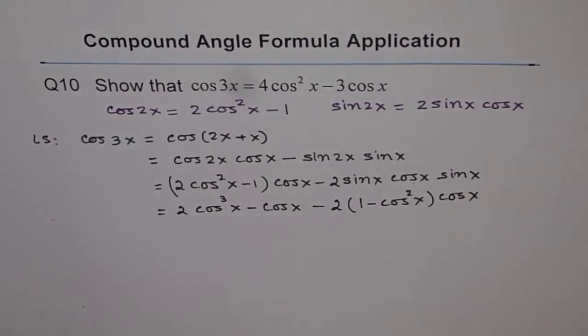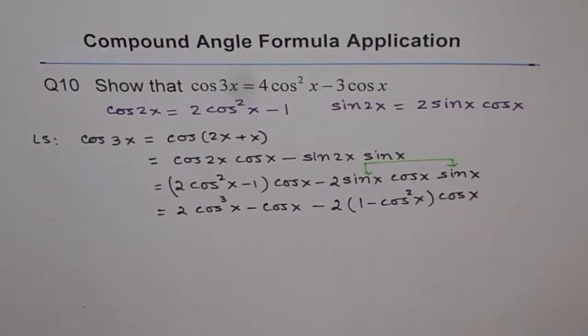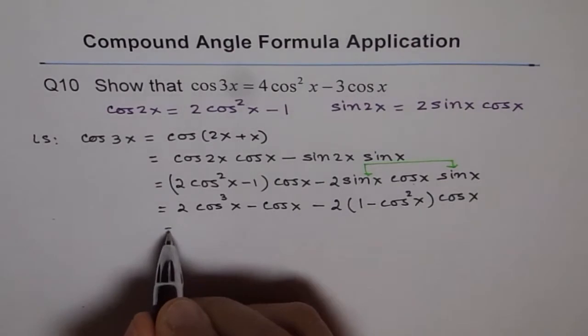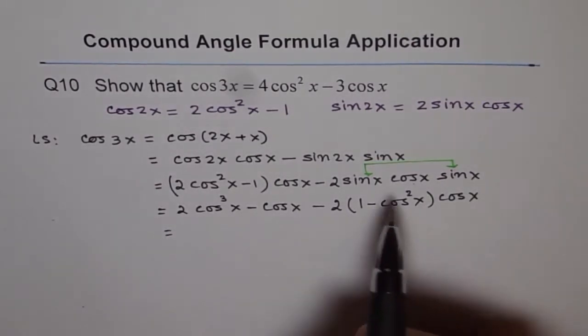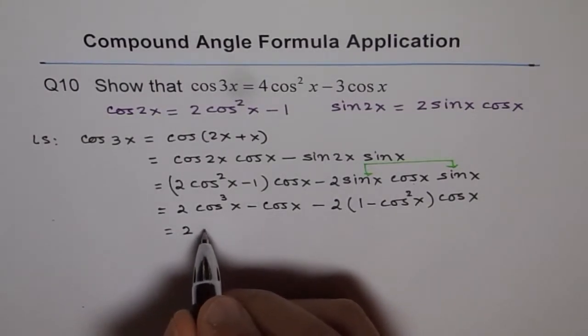So what we did here is that we multiplied these two sins and we got sin squared x, and then we wrote sin squared x as 1 minus cos squared x. Now we can expand this also. See, all the terms now are in cos, so we will just need to expand and simplify.